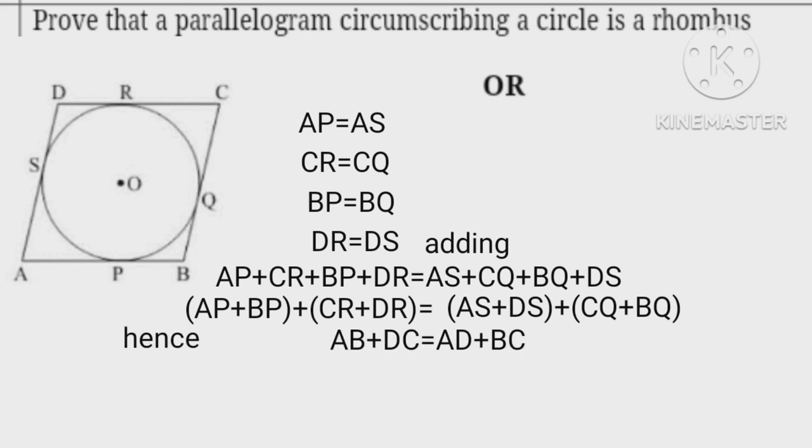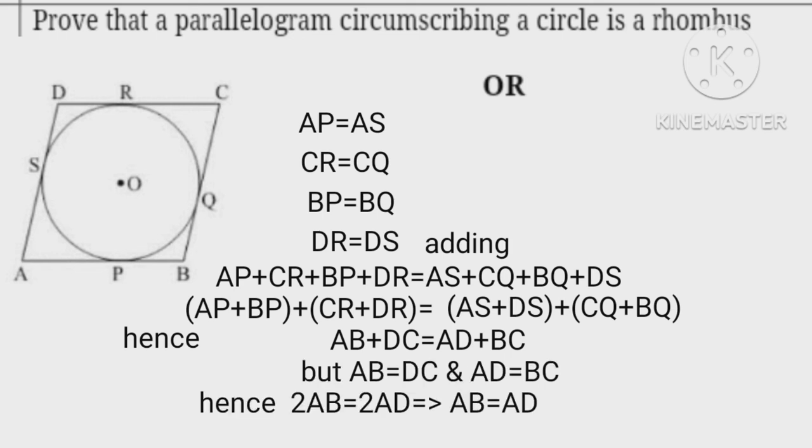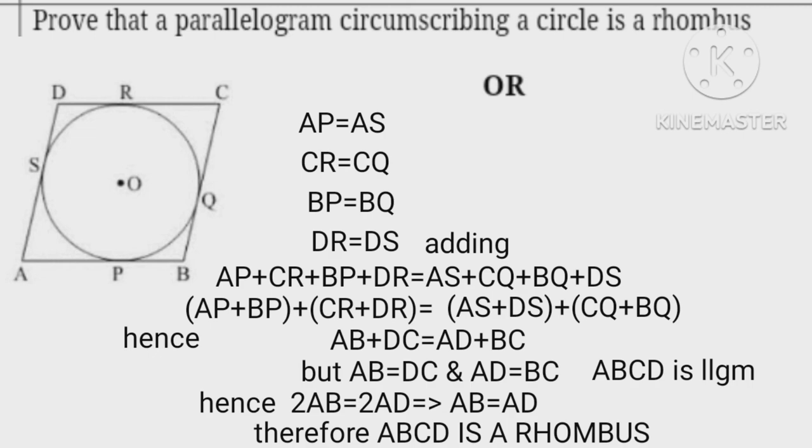Hence AB equals AD. Therefore ABCD is a rhombus.